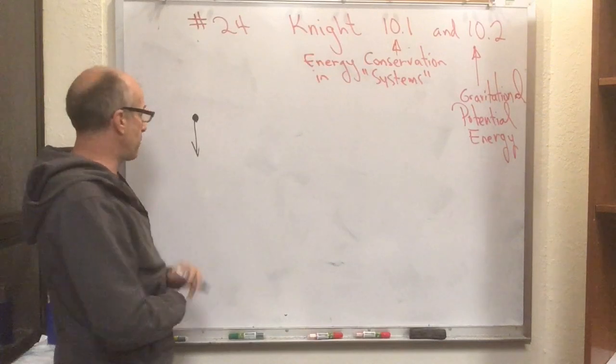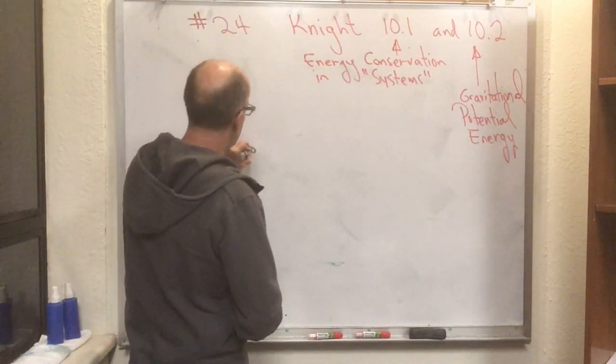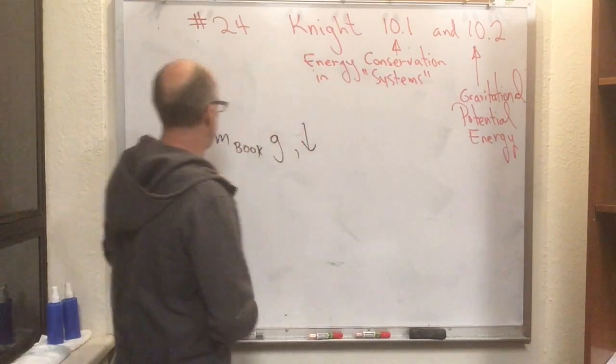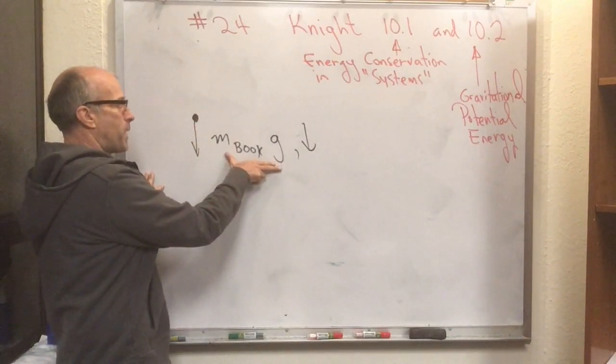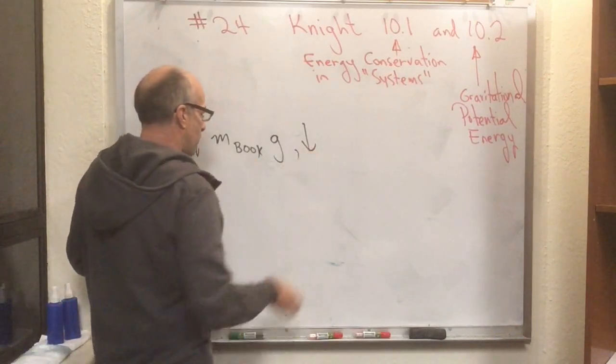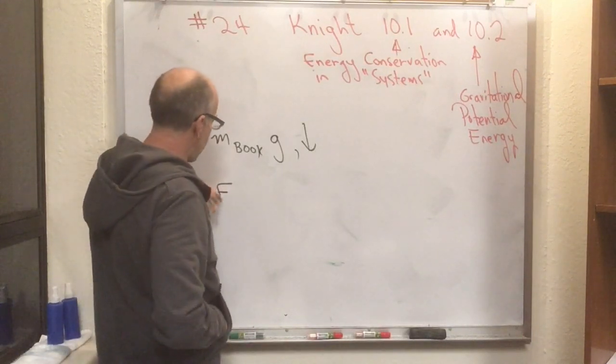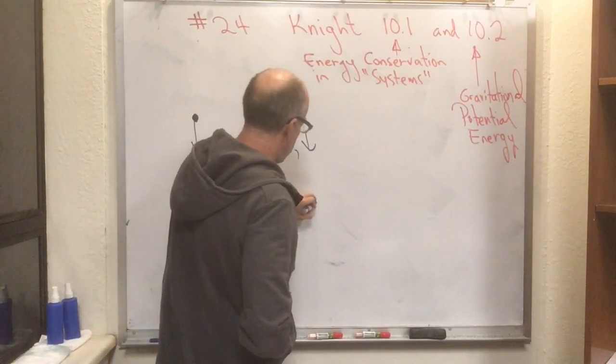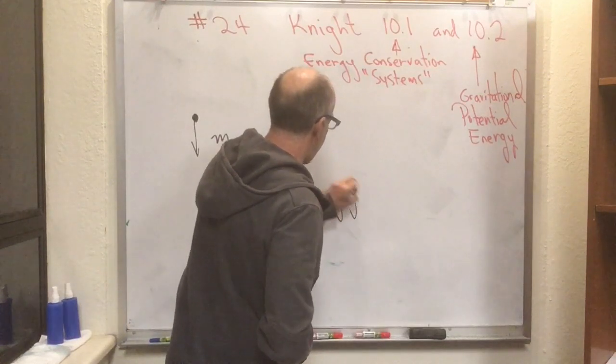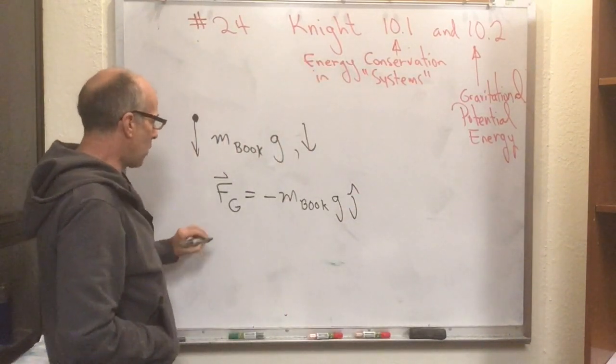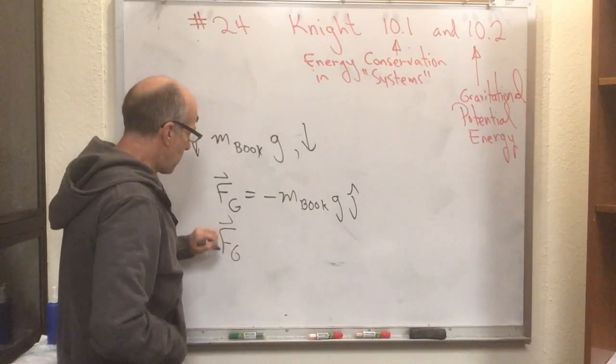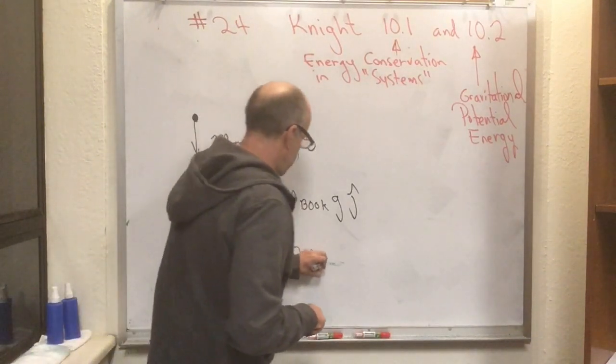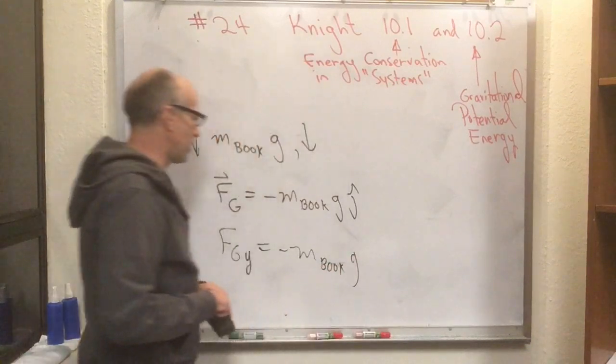Here's the free body diagram for the book. It's pretty darn simple. It has one force in the downward direction, if that's the only thing going on. So there's the vector, and its magnitude is M book G, and it's in the downward direction. We have other ways of writing that. We could say FG, the force of gravity on the book, is equal to minus M book G J hat. Or we could say the force of gravity's Y component is equal to minus M book G. Those are all equally good ways of saying that.